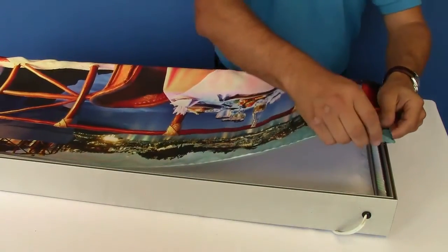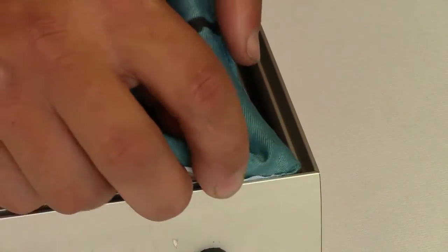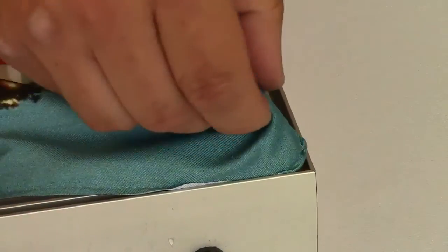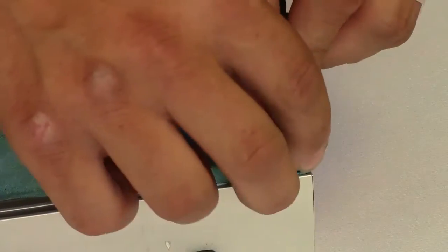In order to begin installing a new fabric, grab the corner and place it inside the extrusion, then push the fabric around the corner inside.